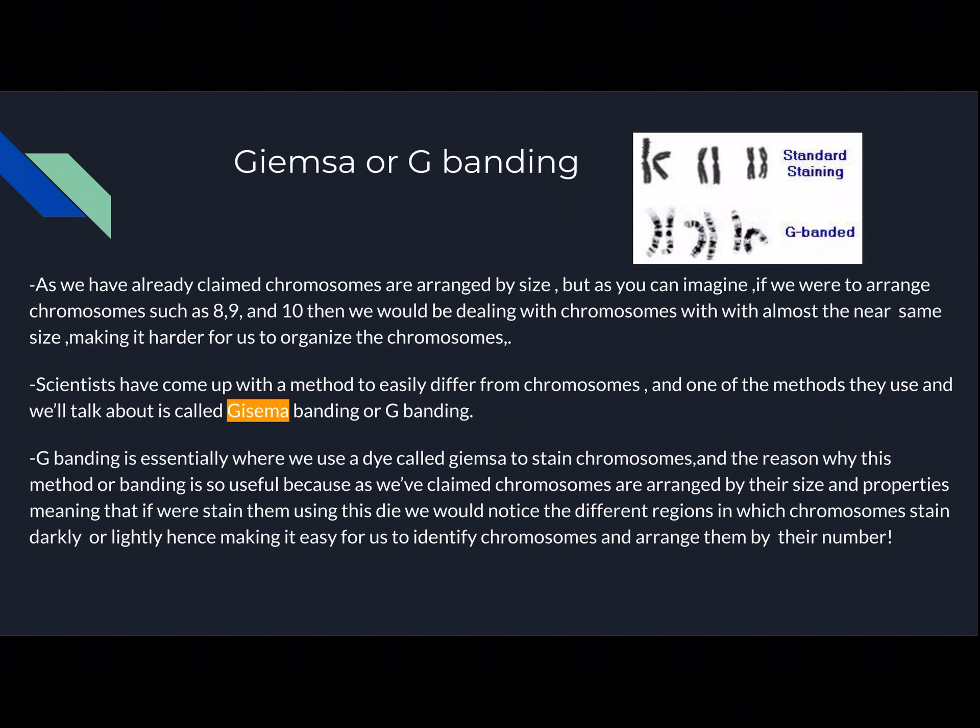Let's talk about Giemsa, or G-banding. Chromosomes are arranged by size, but as you can imagine, if we were to arrange chromosomes such as 8, 9, and 10, we would be dealing with chromosomes of almost the same size, making it harder to organize them. Scientists have come up with a method to easily differentiate chromosomes with roughly the same size. G-banding is essentially where we use a dye called Giemsa to stain chromosomes. This banding is so useful because each chromosome is unique, and when stained with this dye, we notice different regions that stain darkly or lightly, making it easy to identify chromosomes and arrange them by their number.